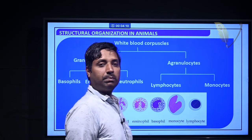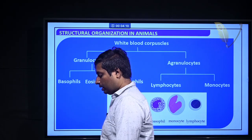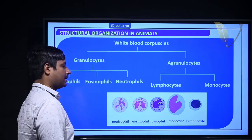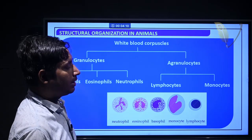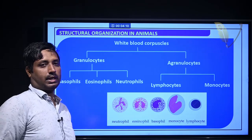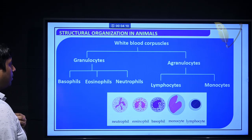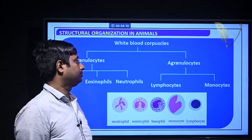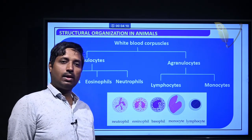When white blood cells are low, the condition is called agranulocytosis, meaning the absence of granulocytes. Granulocytes include basophil, eosinophil, and neutrophil, while agranulocytes include lymphocyte and monocyte.